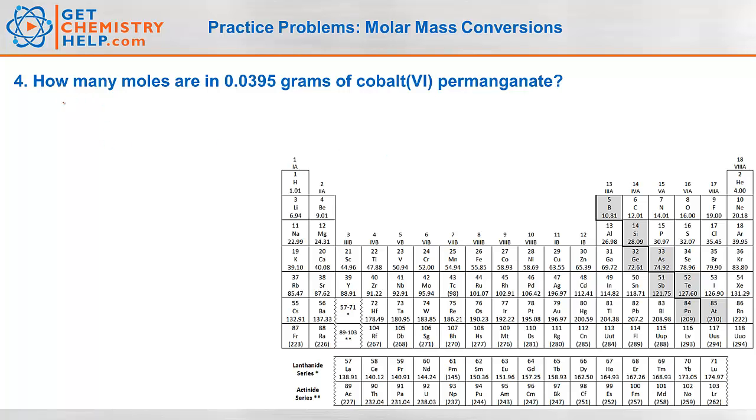Okay. One last problem. How many moles are in 0.0395 grams of cobalt(VI) permanganate? So I want to turn this mass into moles. So again, we need molar mass. So let's figure out the formula of cobalt(VI) permanganate. Well, this is an ionic compound because we've got a metal and a polyatomic. So cobalt(VI) would be cobalt 6 plus, permanganate is just one of the polyatomics you have to memorize. It's MnO4 negative. So if I do the crossover rule, I'm going to get cobalt, parenthesis, MnO4, parenthesis, 6.